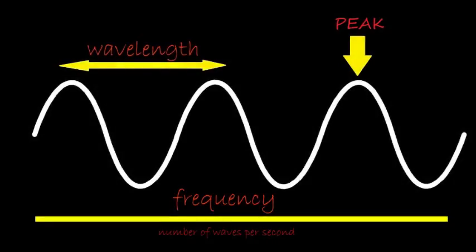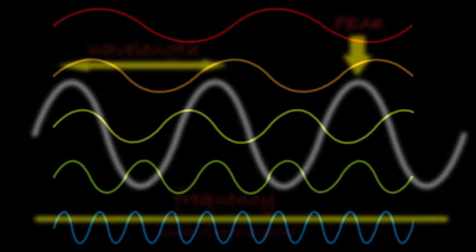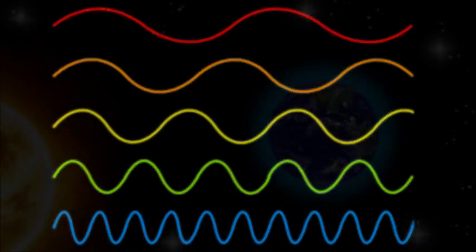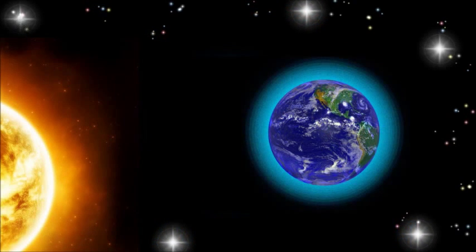Frequency describes the number of waves that pass a fixed place in a given amount of time. Each light color has a different wavelength and frequency. Yellow, orange, and red have a longer wavelength and lower frequency and energy than blue or green.